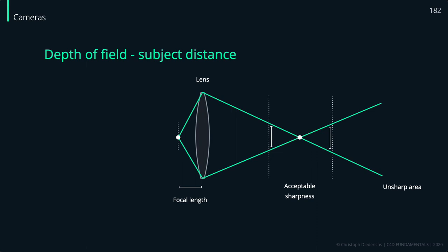Another way to change the acceptable sharpness area is by moving closer to the object. When we move closer, the angle of those rays gets larger, which — similar to the focal length effect — means the acceptable sharpness area gets smaller, giving us a narrower depth of field.